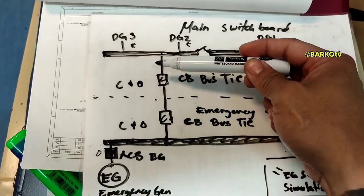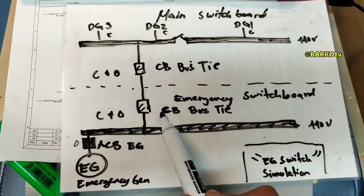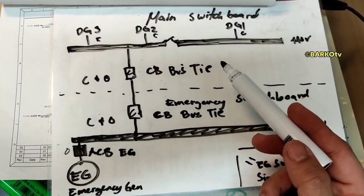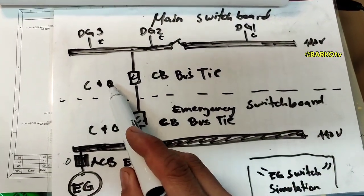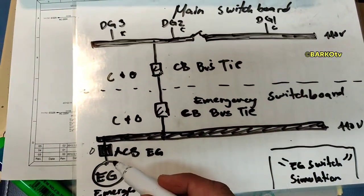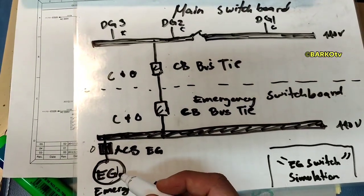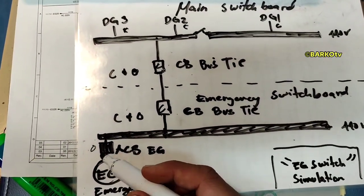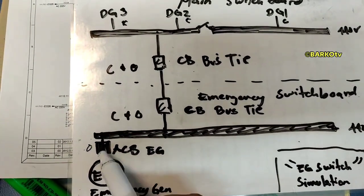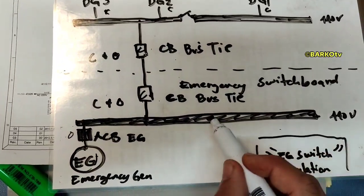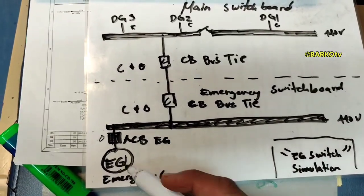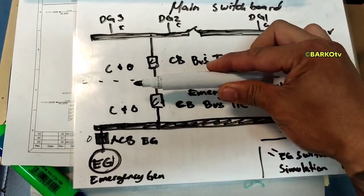During blackout test or simulation, if you open the bus tie located at the main switchboard, it will automatically run the emergency generator. Then there is a time delay, after which the ACB will close and supply the emergency switchboard — 440V — meaning there is power coming from the emergency generator.